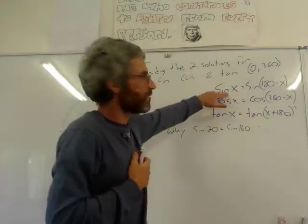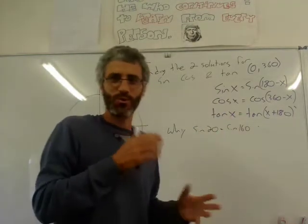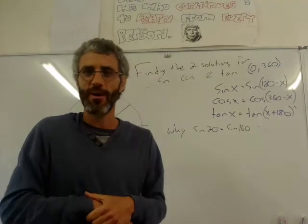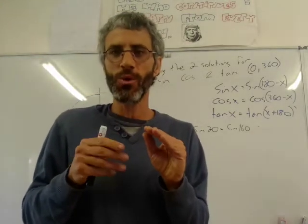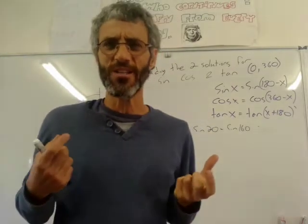I'm just trying to explain at least for sine why do we have two solutions. Why can we use y if one solution is x, the other angle will be 180 minus x. We will learn it properly next year but I know some of you, I'm hoping that some of you want to know why. Why is that true? Why do we get these two solutions?